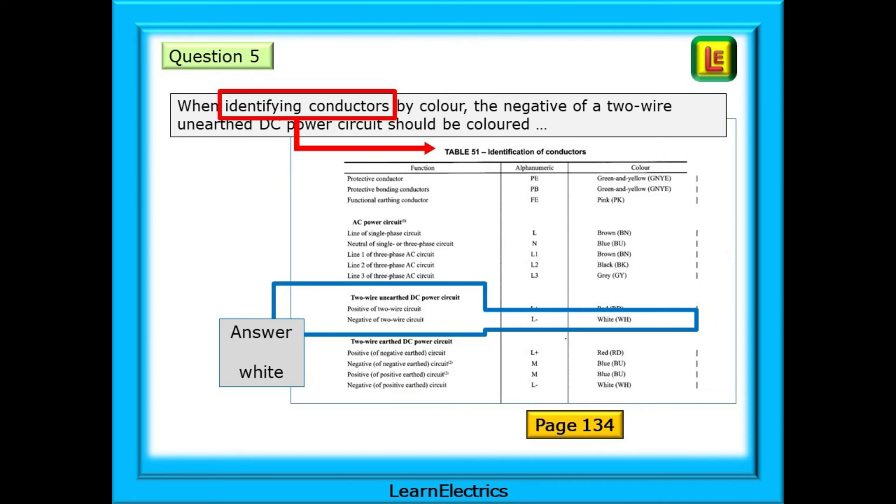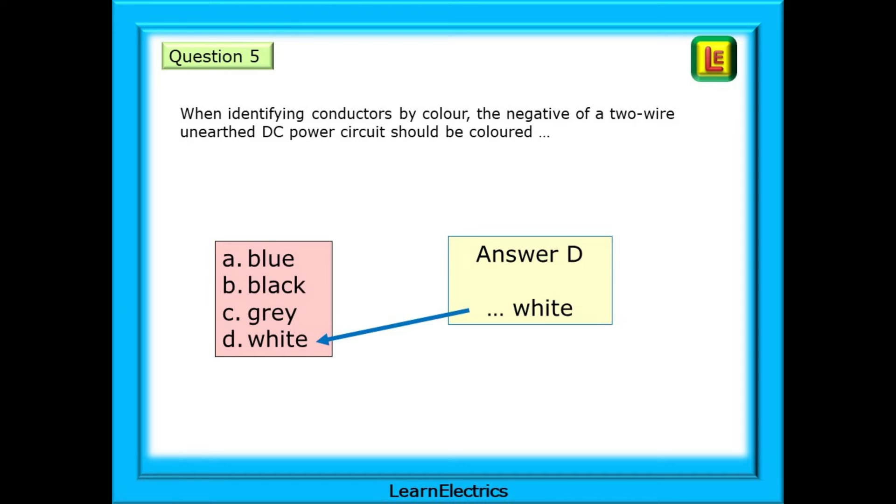This table should be easy to find in table of tables. The key word is identifying conductors. Find the almost exact word match, and we are sent to page 134, where we find table 51. Now, it is just a case of analysing the question. What does it want to know? It asks about a two-wire unearthed DC power circuit. We can find that in the table, and now we have two possible colours to choose from. The question asks for negative, so that narrows it down to just one colour. Our answer is white. And we must choose answer D, white. Easy if you follow a logical method.